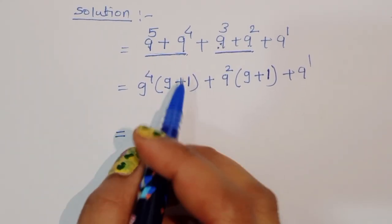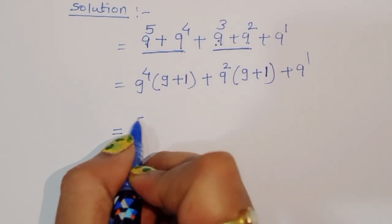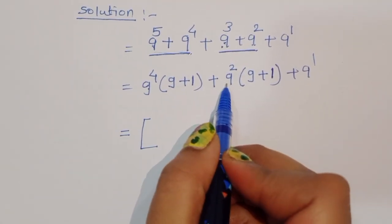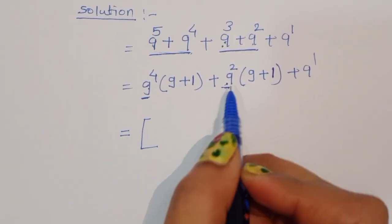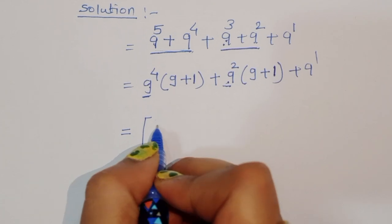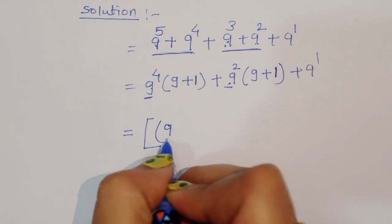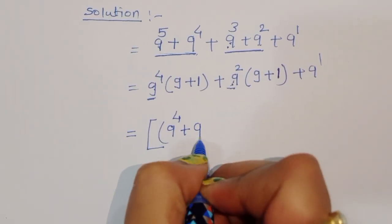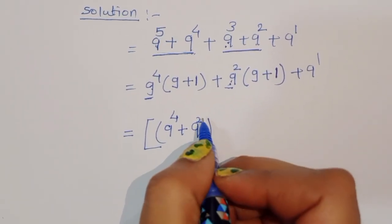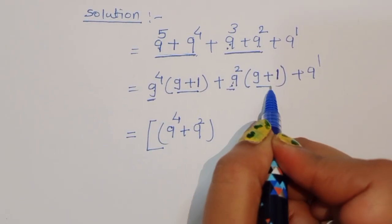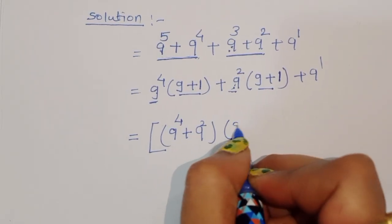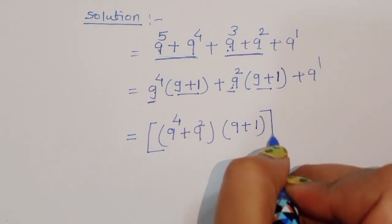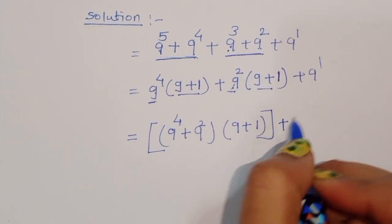Now 9 power 4 and 9 power 2 — both are common here, so we can take 9 power 4 plus 9 power 2 common. Then we have the factor 9 plus 1 times, close bracket, plus 9.